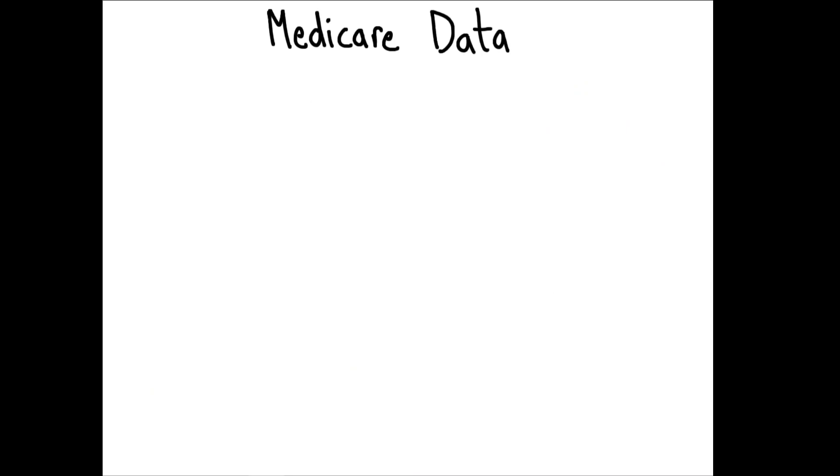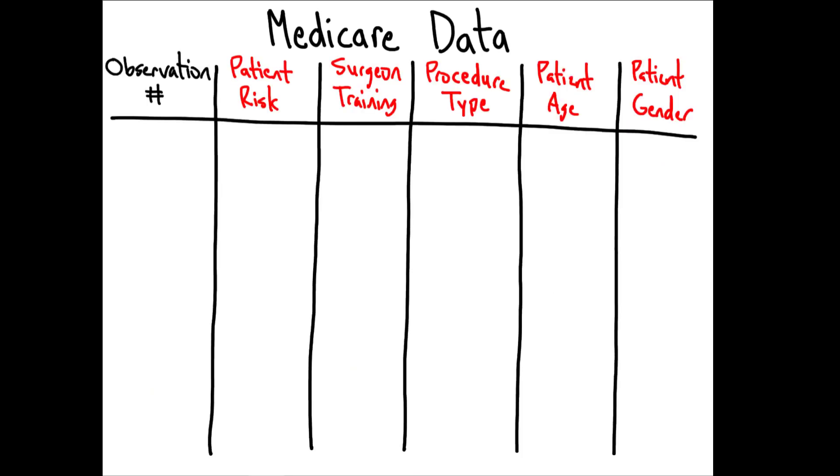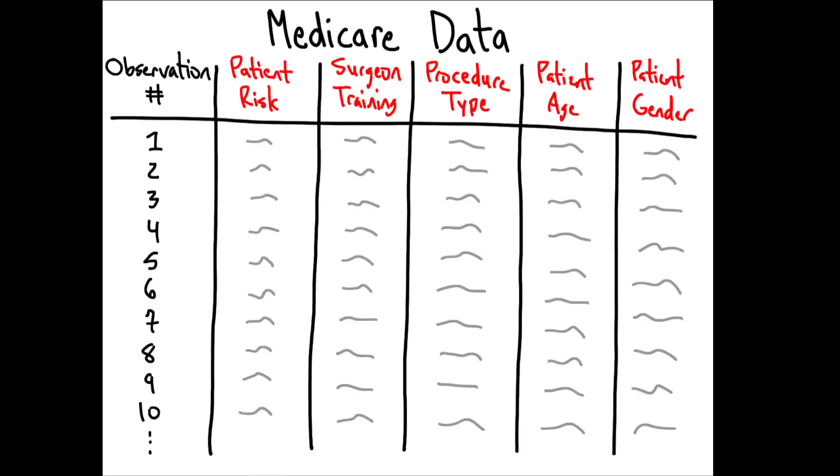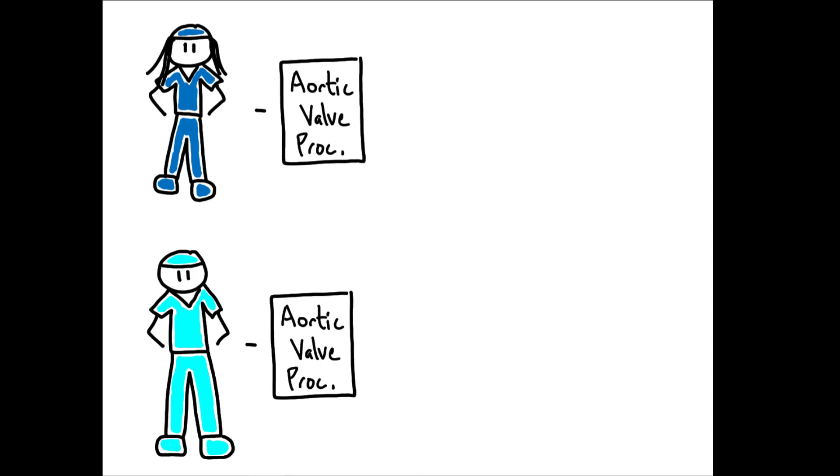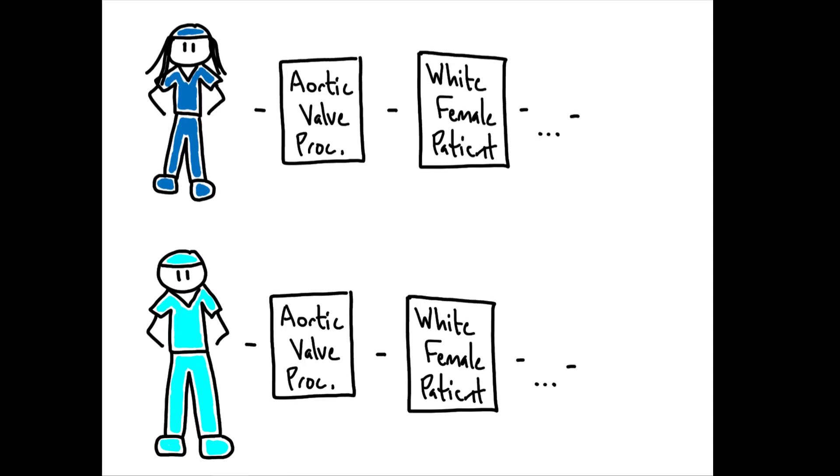in this setting the author has access to detailed Medicare data which allow her to implement a matching strategy. For each observation where a female surgeon performs a given procedure, the author matches this to a corresponding observation where a male surgeon performs the same procedure on a similar patient with similar observable characteristics and the same outcome results, for example, a patient death. The question is whether the fact that the performing surgeon is male or female has any meaningful effect on how the referring doctor reacts to this event.